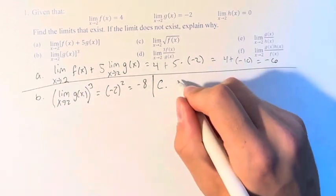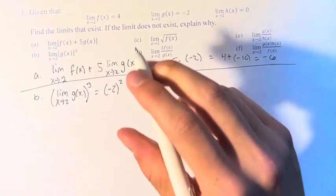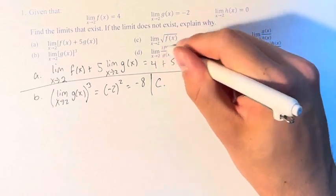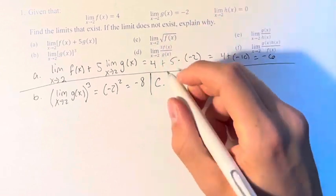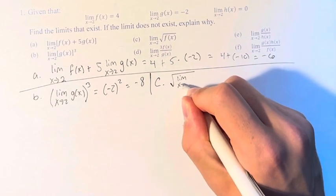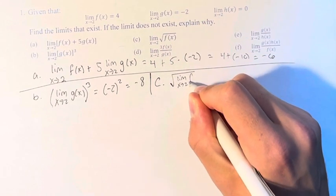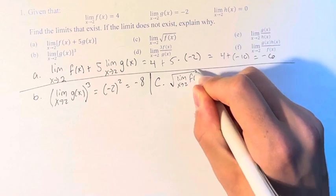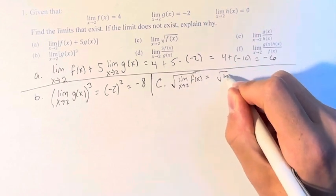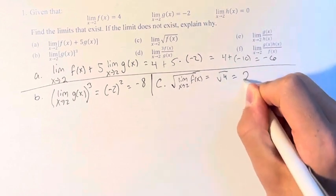In c, we have the limit as x approaches 2 of the square root of f of x, which is equal to the square root of the limit as x approaches 2 of f of x, which is the square root of 4, which is 2.